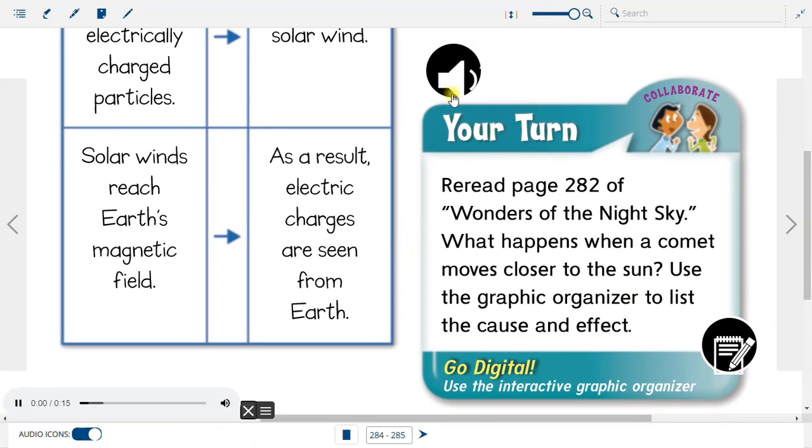Your turn. Reread page 282 of Wonders of the Night Sky. What happens when a comet moves closer to the sun? Use the graphic organizer to list the cause and effect.